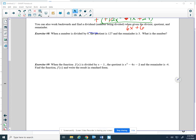Our first one says when a number—so we're asking for this number—when a number is divided by nine, the quotient is 127, and the remainder is three.